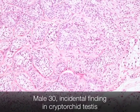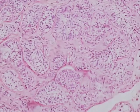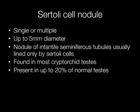This is a Sertoli cell nodule. These are extremely common — they may be present in up to 20% of normal testes but are most frequently seen in cryptorchid testes. They may be single or multiple and up to around five millimetres in diameter. Histologically they are composed of infantile type seminiferous tubules usually lined only by Sertoli cells.